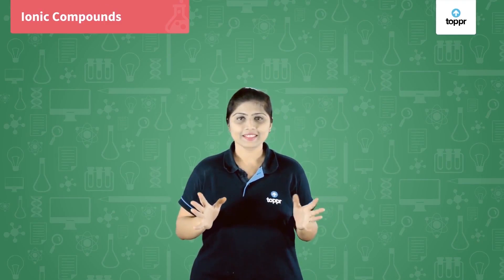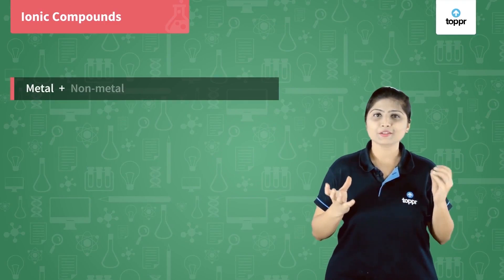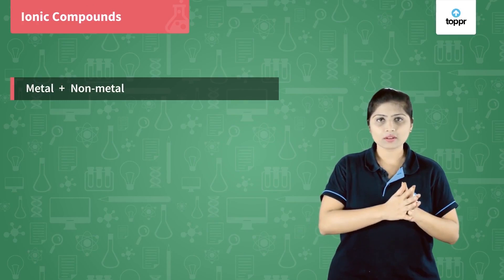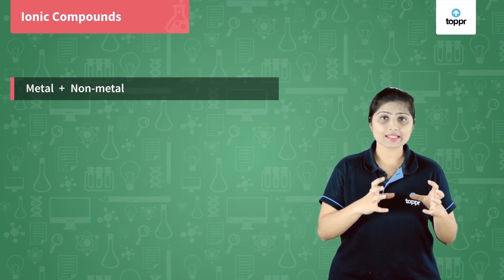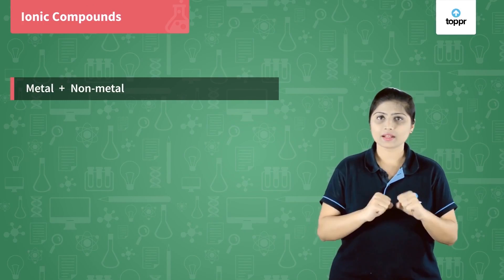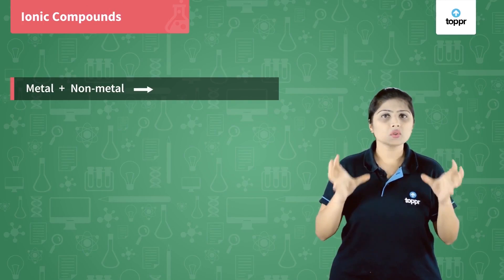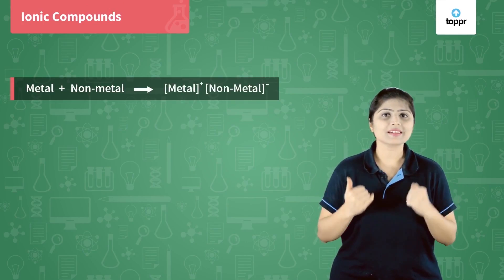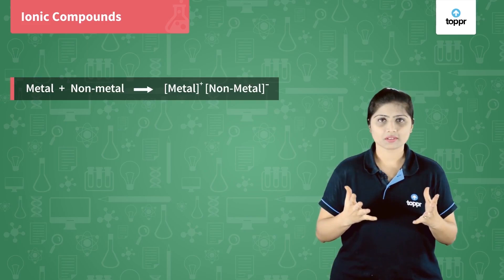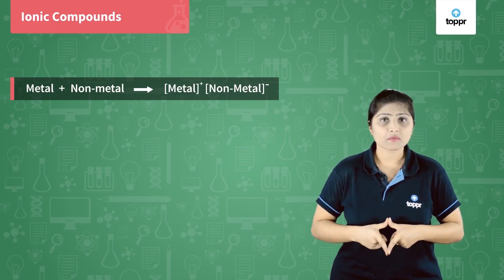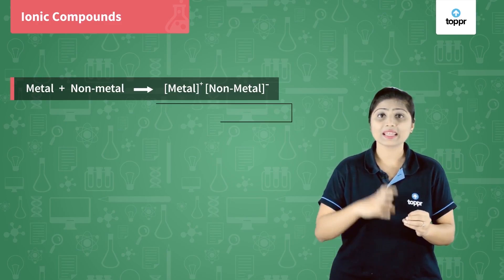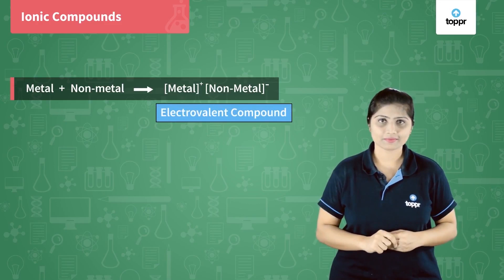Ionic compounds are compounds which are made up of a metal and a non-metal. The metal donates an electron whereas the non-metal accepts that electron, due to which the metal gains a positive charge and the non-metal gains a negative charge. Such compounds formed by a metal and a non-metal are also called electrovalent compounds.